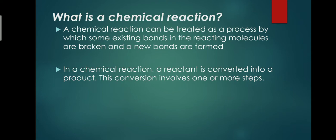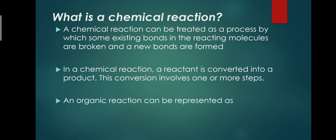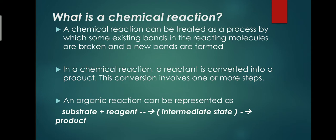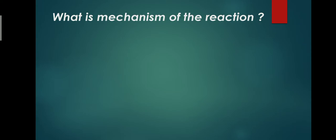This conversion can take place in more than one step. An organic reaction can be represented as: substrate plus reagent, which come together to form an intermediate. This intermediate is relatively unstable and it will rearrange itself to form a stable product.